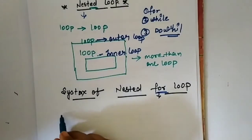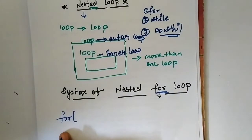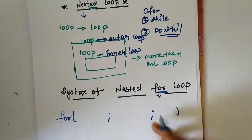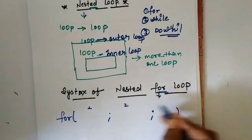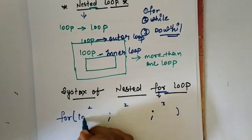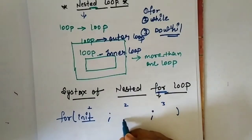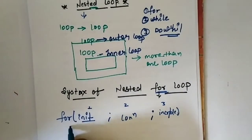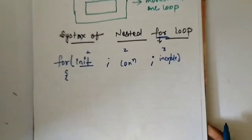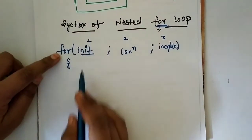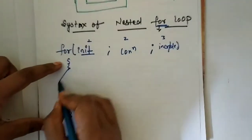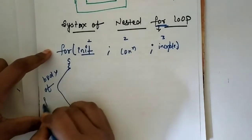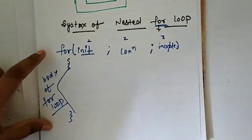So what is the syntax of a for loop? We write 'for', and there are three sections separated by semicolons. The first section is initialization, the second part contains a condition, and the third part contains an increment or decrement. Then we open a curly bracket — this curly bracket is the boundary, or body, of that for loop.